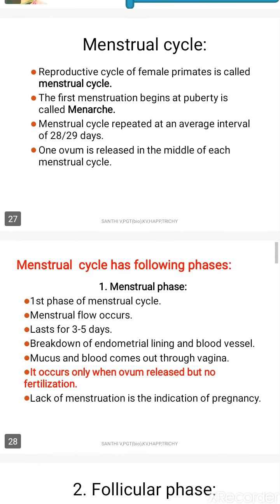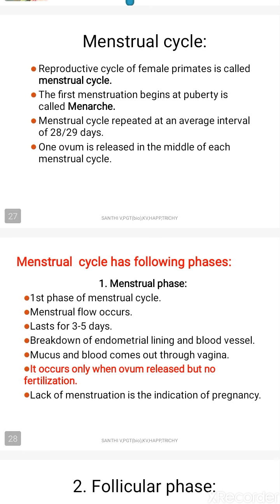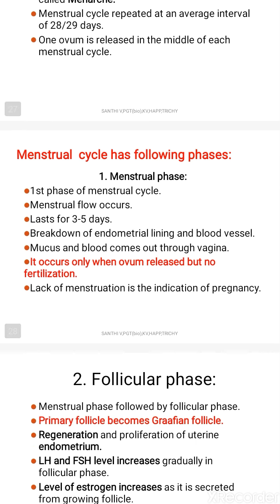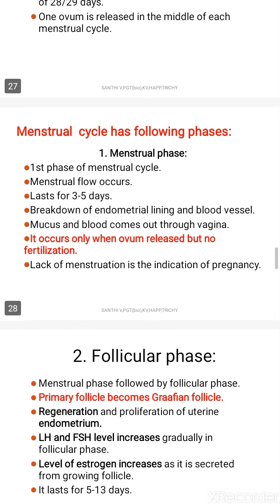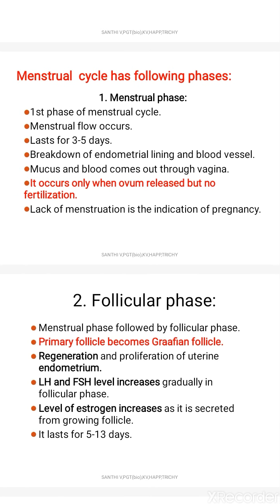Now let us see step by step. The menstrual cycle includes different phases. The first phase is called the menstrual phase. During this time the menstrual flow occurs and it lasts for about 3 to 5 days. Breakdown of the endometrial lining occurs during this time.